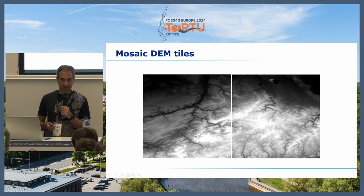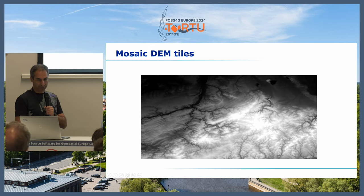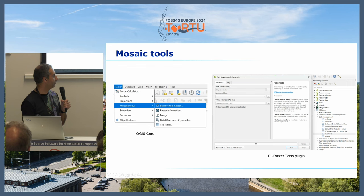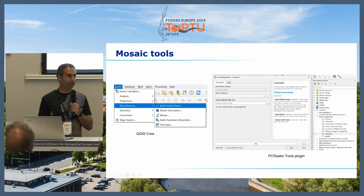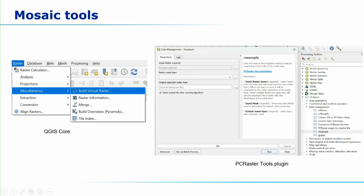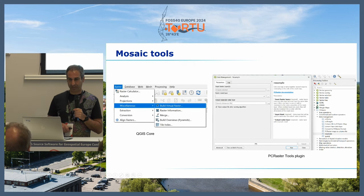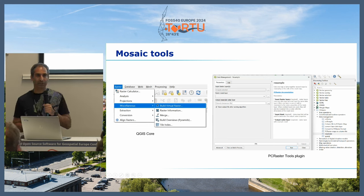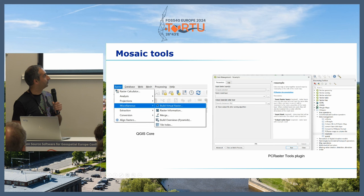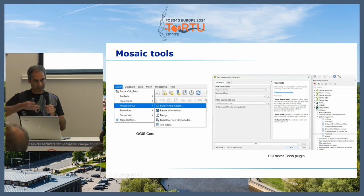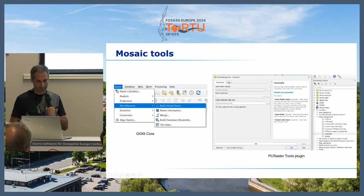Mosaicing is often skipped because tools already do it for you. But if you need to do it, you have two choices from QGIS Core: Merge, which creates a new (and quite large) stitched GeoTIFF, or a virtual raster, which doesn't duplicate the data but defines virtually that the tiles belong together. If you have DEMs from different sources with different cell sizes, I recommend the resample tool from the PCRaster Tools plugin, which fits everything to a mask raster and resamples to that resolution — you can add as many rasters as you want and it fills in no-data with the next raster in your list.